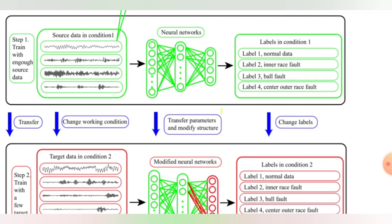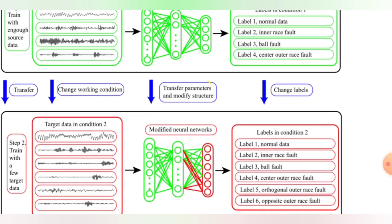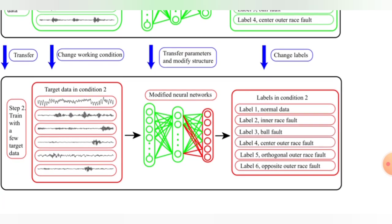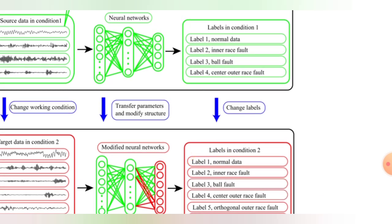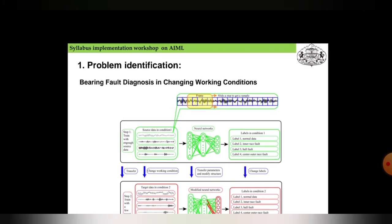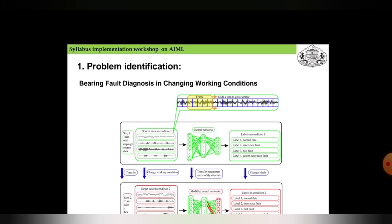Similarly goes for the neural networks which is mentioned in green. Now the transfer parameter and modify structure is set. The modified neural networks and changing labels in condition two: level one normal data, level two inner race fault, third ball fault, fourth center outer race fault, fifth orthogonal outer race fault, and six is the opposite outer race fault. So these are the fault diagnosis of the bearing in changing working conditions. This is how ML can help us by adding new types of faults.